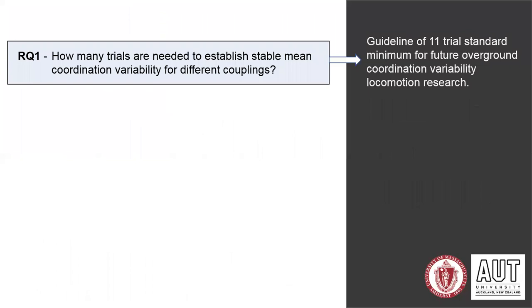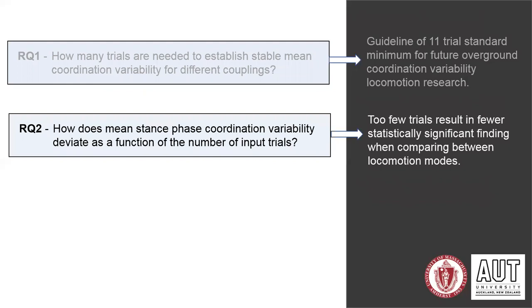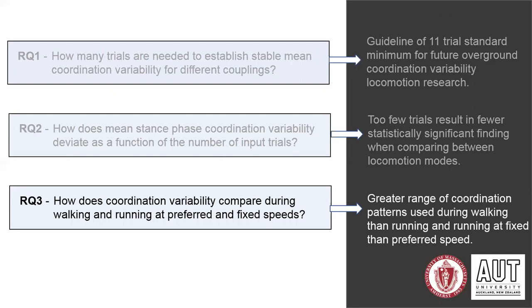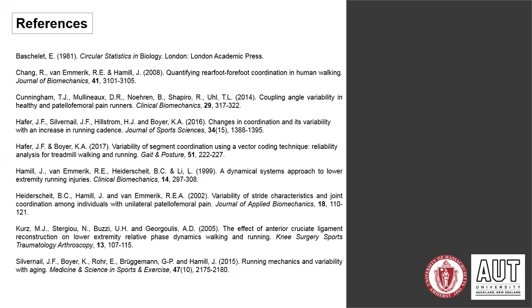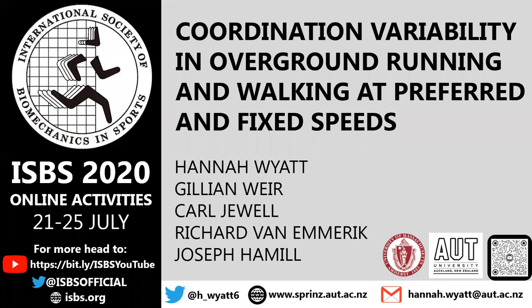Overall, three key outcomes: the study identified a guideline of 11 trials as a standard minimum for future coordination variability locomotion research using a vector coding approach; it highlighted the effect of too few trials in resulting in fewer statistically significant differences when comparing between locomotion modes; and found greater range of coordination patterns during walking compared to running and during running at fixed compared to preferred speeds. Thank you all for listening today — please feel free to get in contact with any comments or questions via the details on the slide.